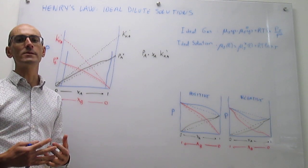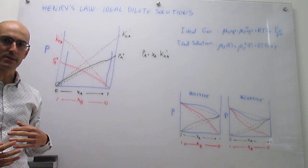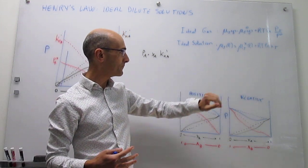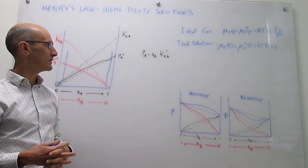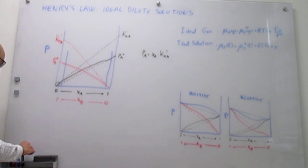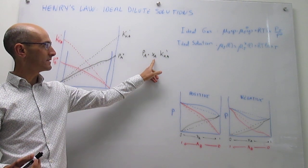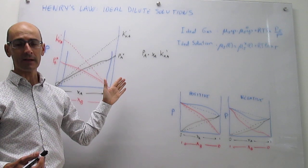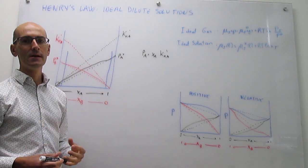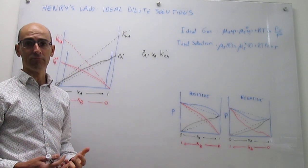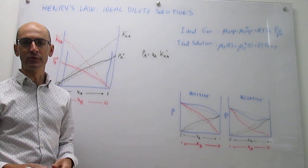In the next videos we will see how Henry's law is useful in helping us write the chemical potential for the minority component — the solute — as a function of its concentration. We will wrap up this video by writing a few other expressions for Henry's law. The only difference between them is how you express the concentration. In this particular case we are using mole fraction, but you can express the concentration of a solute in many ways — for example, molality or molarity — and there is a Henry's law version for each.